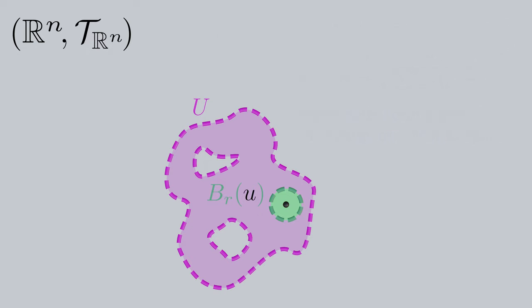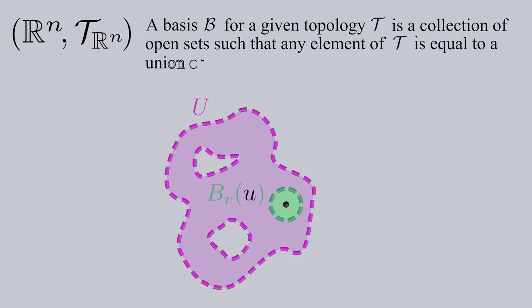Now that we've defined our topology, another important definition of a basis for a given topology, not an unknown topology, is that it's a collection of open sets such that any element of the topology is equal to a union of elements of the basis.